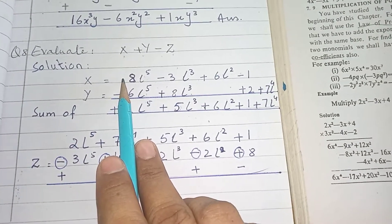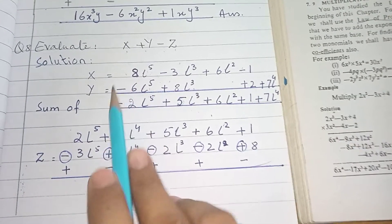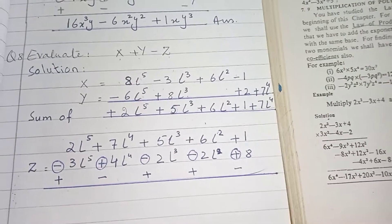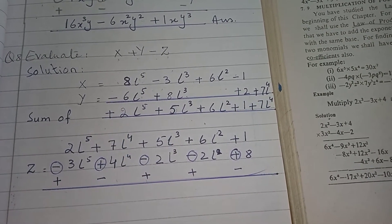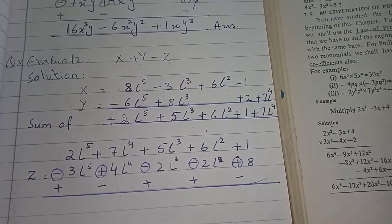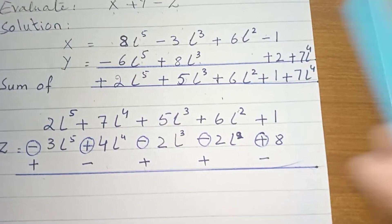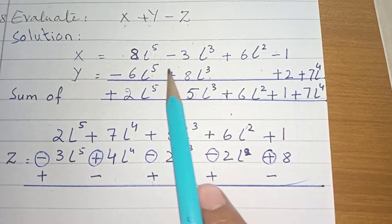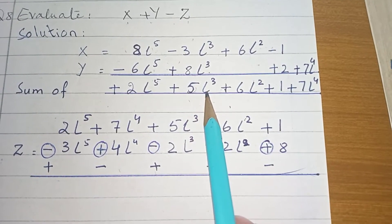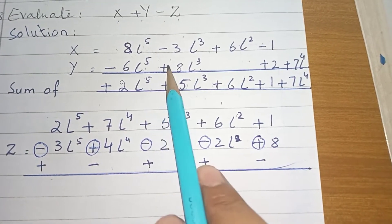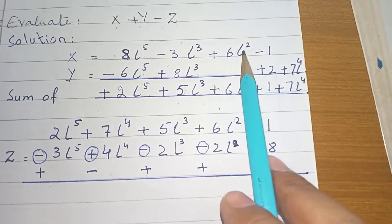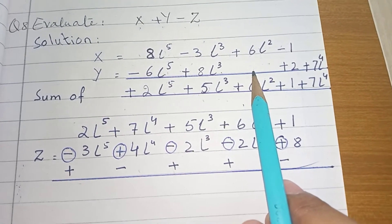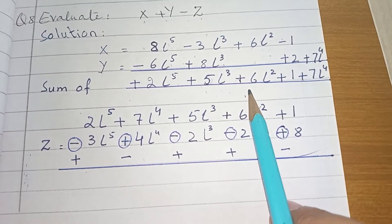Remember in subtract we inverse the sign of lower term, but in addition no need to inverse the sign. Now we solve it. Over here hidden sign is positive or plus sign. Plus minus minus, we minus it. 8 minus 6, 2 is left with plus sign because 8 is a bigger number.